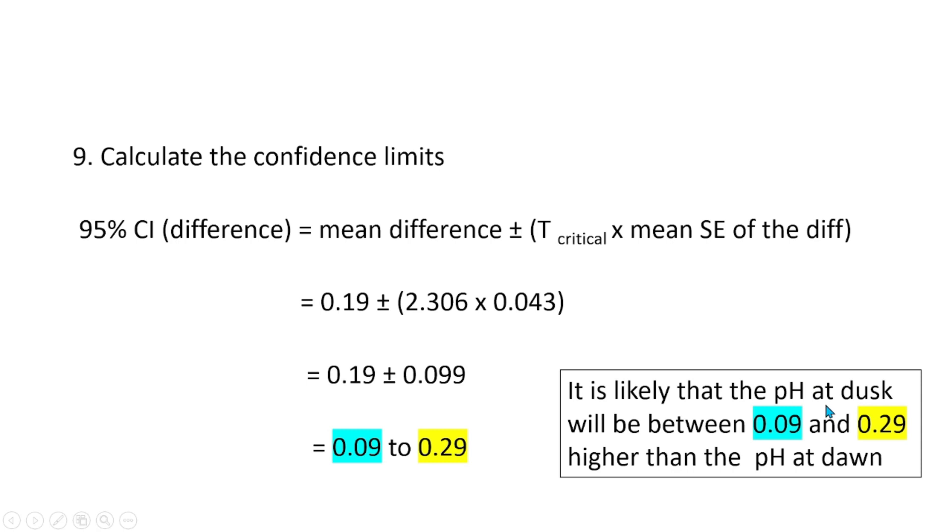Step 9, or the last step, let's compute the confidence limits. The confidence limit equals the mean difference plus minus t-critical multiplied by the mean standard error of the difference. By substituting the formula, we found that the confidence limit is between 0.09 and 0.29, suggesting that the pH at dusk will be between 0.09 and 0.29 higher than the pH at dawn.